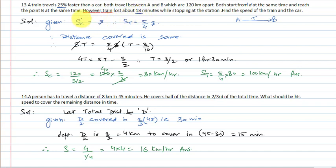We let the speed of the car be s, so the speed of the train is 5/4 of s (25% faster). The distance covered by both is the same — that is d. Distance equals speed into time. For the car, distance equals speed s into time t. For the train, speed is 5/4 of s.